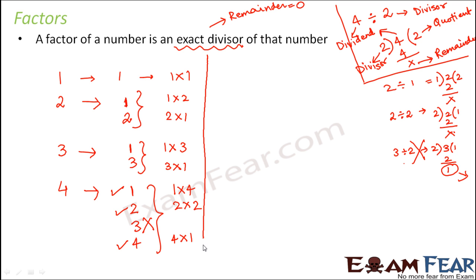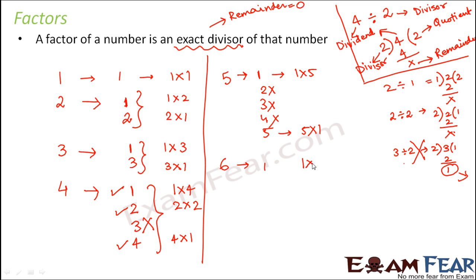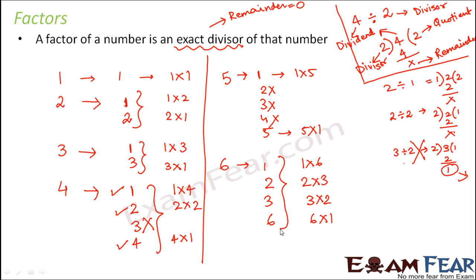Let's talk about 5. In the case of 5, 1 is a factor because 1 × 5 = 5. Is 2 a factor? No. Is 3 a factor? No. Is 4 a factor? No. Is 5 a factor? Yes, because 5 × 1 = 5. Now for 6: 1 is a factor (1 × 6 = 6), 2 is a factor (2 × 3 = 6), 3 is a factor (3 × 2 = 6), 4 is not a factor, 5 is not a factor, but 6 is a factor (6 × 1 = 6). So 1, 2, 3, and 6 are the factors of 6.